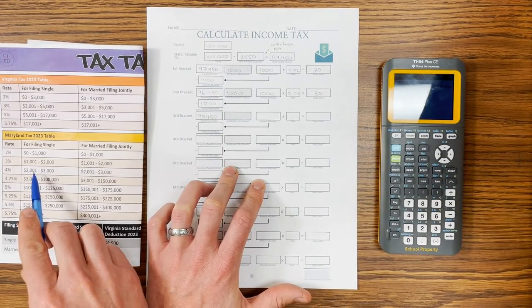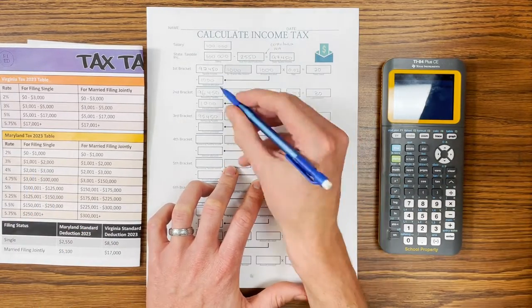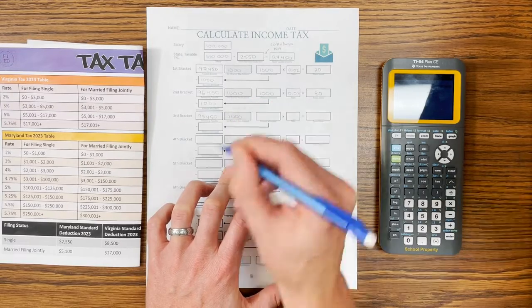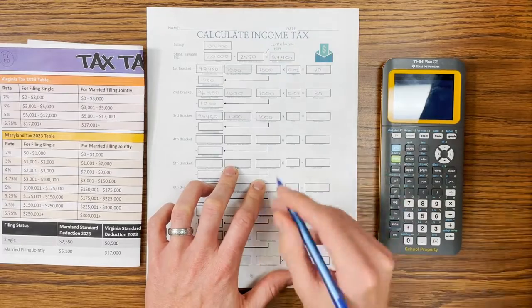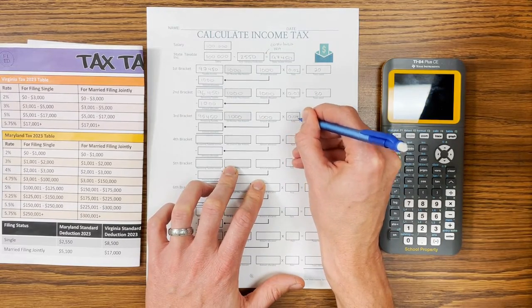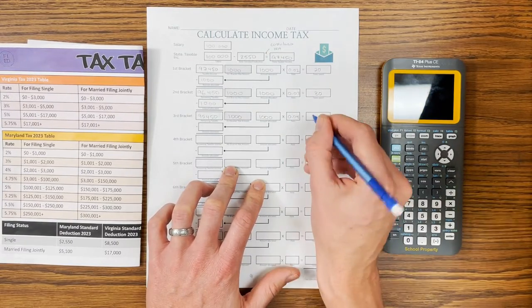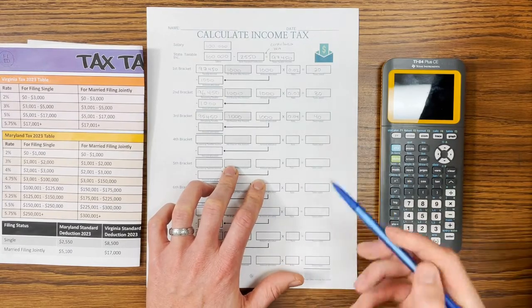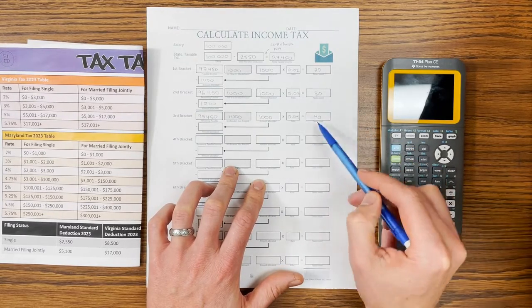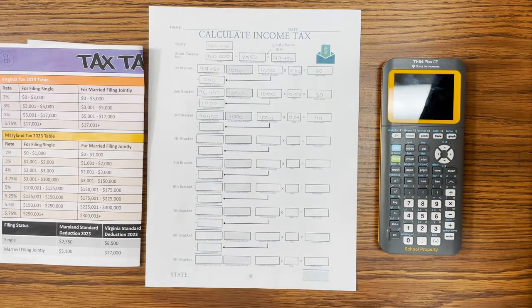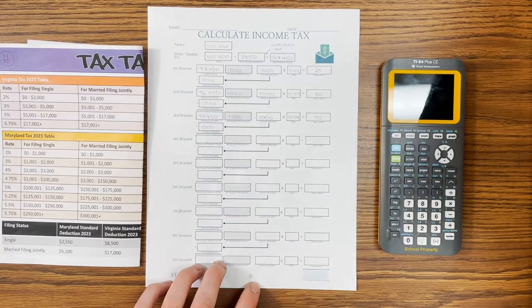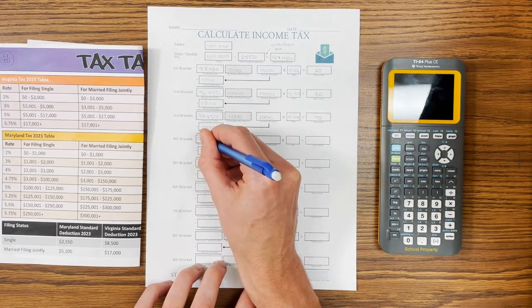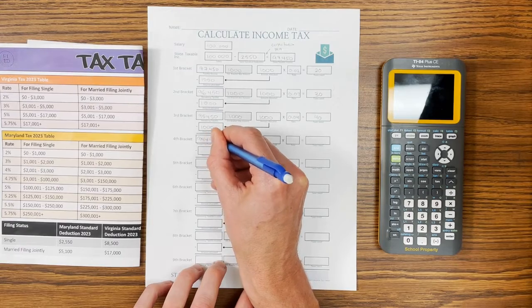The third bracket is our last small one — it also holds $1,000, from $2,000 to $3,000. We're going to fill that up because we still have way more income left. This is a 4% bracket, so 0.04, and we owe $40 here. This is true for most people — you will owe $90 total from those first three brackets. We've taxed that $1,000, so we subtract it out, leaving $94,450.